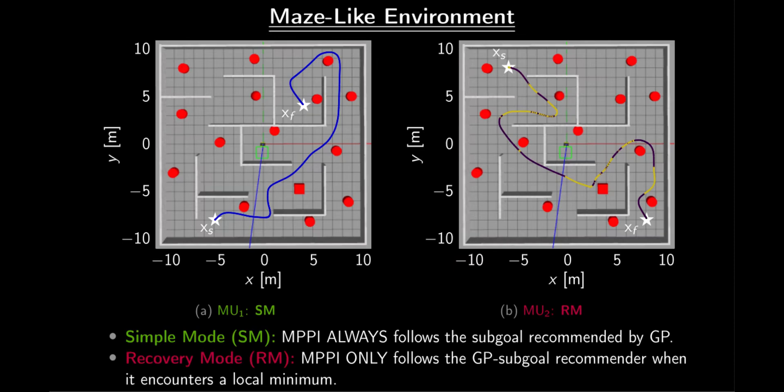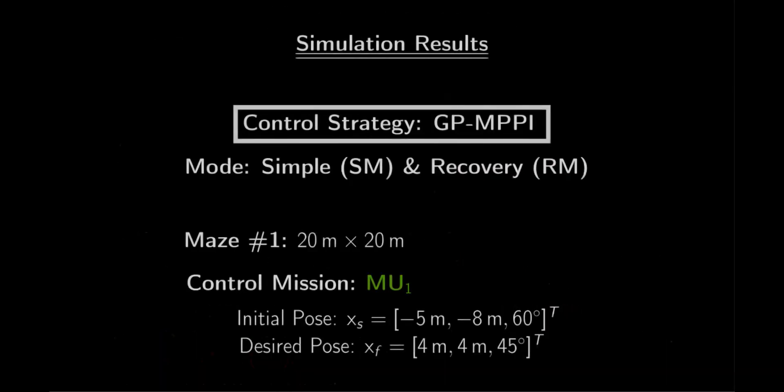In contrast, in recovery mode, MPPI generates the optimal control sequence that steers the robot towards its desired state, adhering to the recommended subgoal only when the robot is at risk of encountering local minima. Take, for example, the robot trajectory shown in figure B, where the yellow color indicates the trajectory segments where GP assisted MPPI in avoiding local minima.